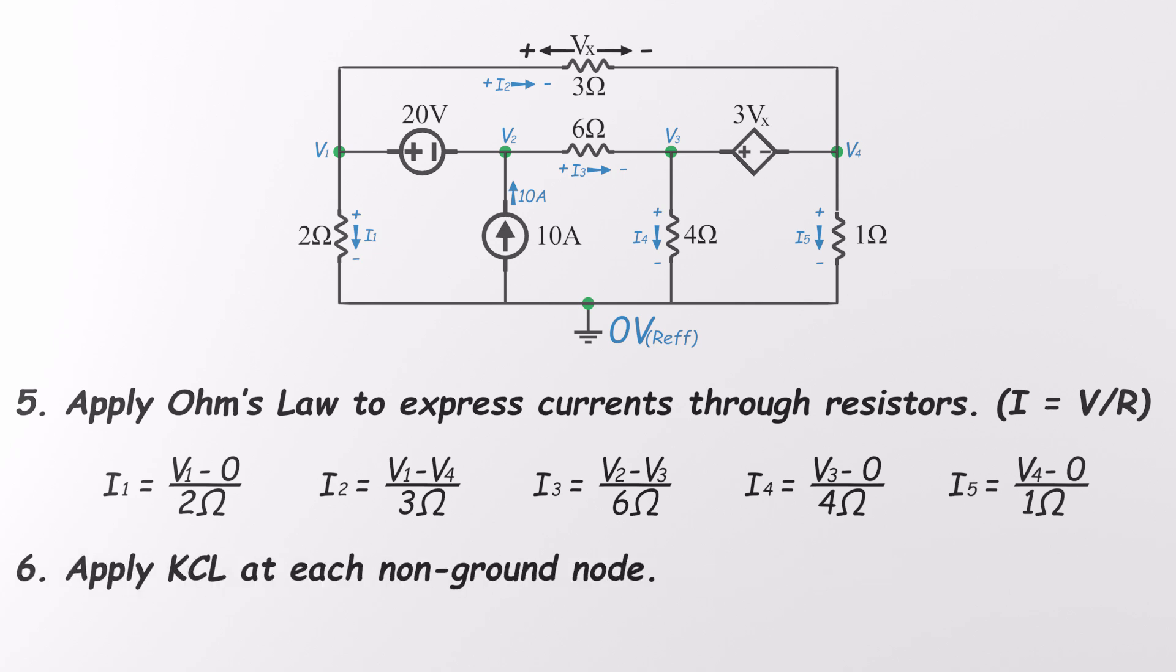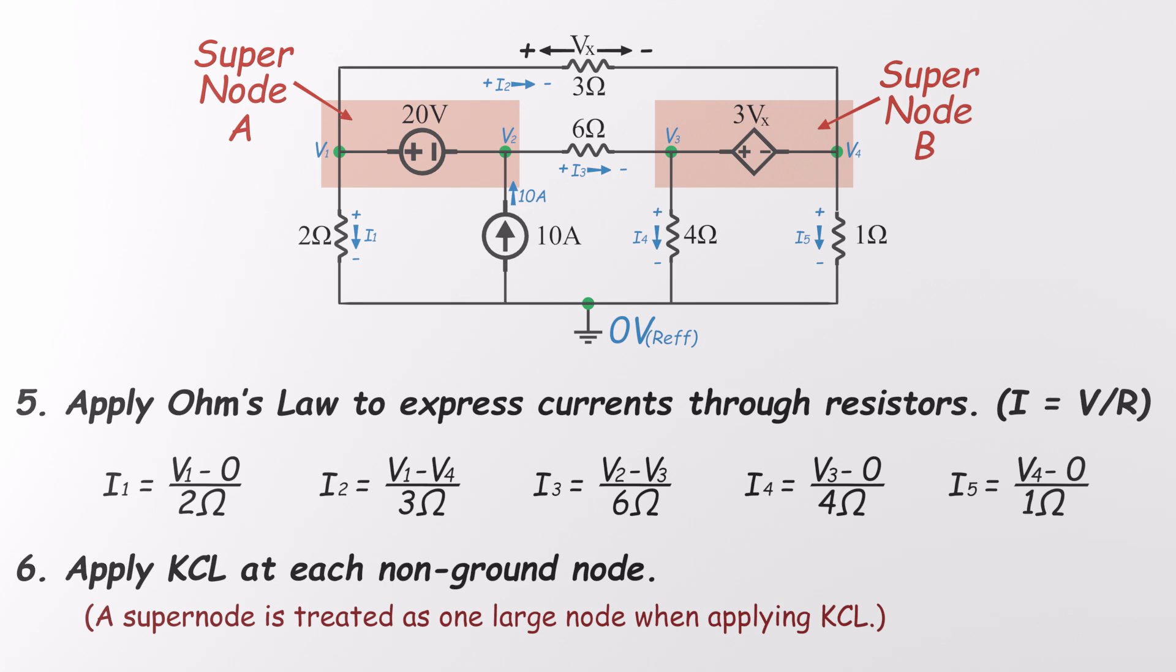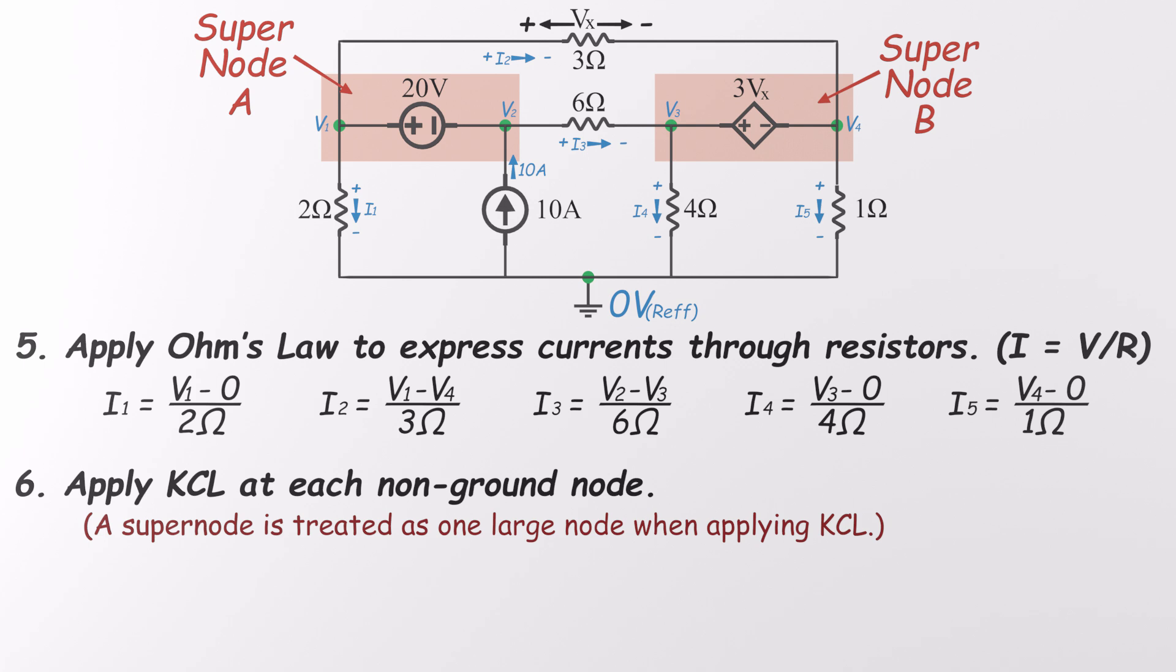Time to apply Kirchhoff's current law, KCL. But there's a catch. All four unknown nodes are connected to voltage sources that aren't tied to ground. That's a problem because we can't directly apply KCL at those nodes. We don't know the current flowing through the voltage sources. So here's the trick. When a voltage source connects two non-reference nodes, we treat both ends as a single supernode. By combining them into one big node, we can apply KCL to the whole group without needing to know the current through the voltage source. Let's write our KCL equations for the two supernodes.